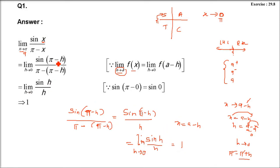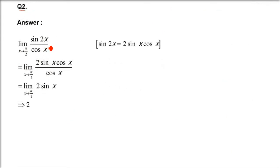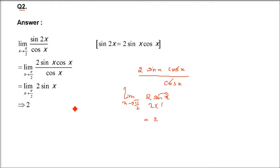Question number 2: sin 2x divided by cos x, limit x tending to π/2. sin 2x can be written as 2 sin x cos x, and cos x is in the denominator. So cos x cancels, leaving 2 sin x. We don't have to change the limit because x tends to π/2 is not an indeterminate case. So 2 sin(π/2) = 2 × 1 = 2.